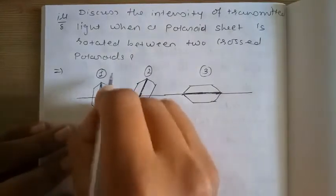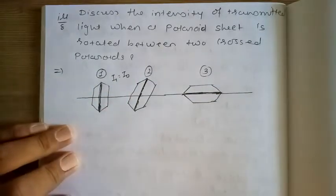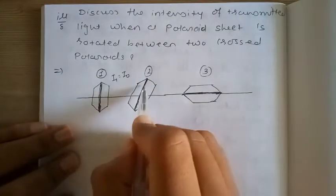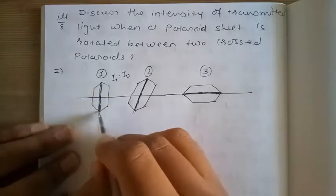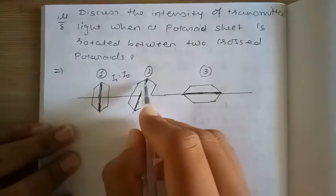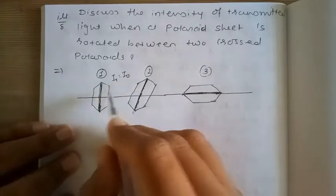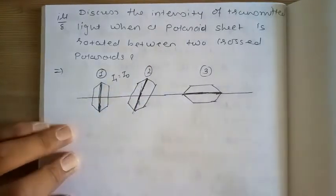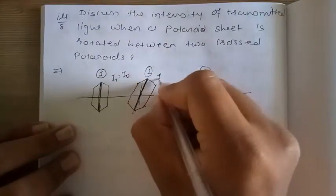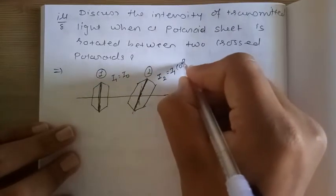The first intensity I1 is equal to I0. Now applying Malus's law, here for polaroid 2, the pass axis of polaroid 2 makes an angle theta with the pass axis of polaroid 1.